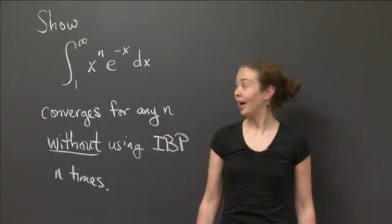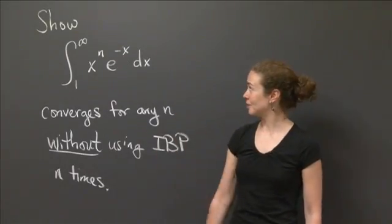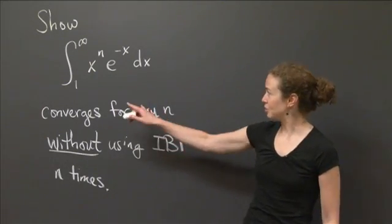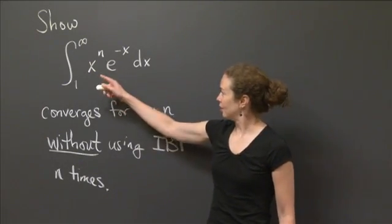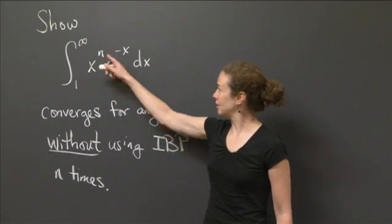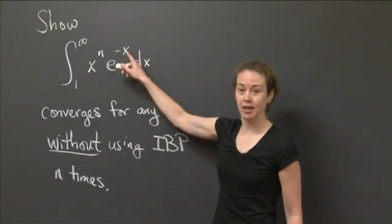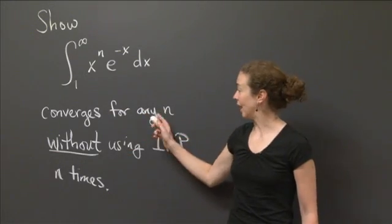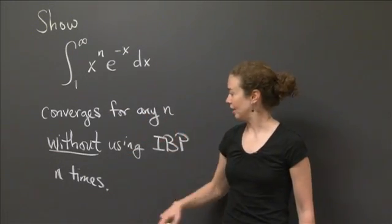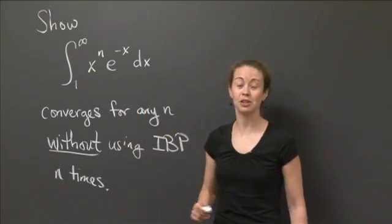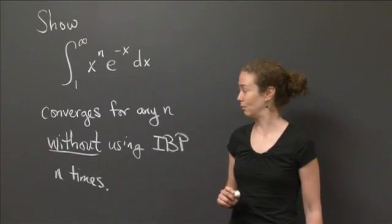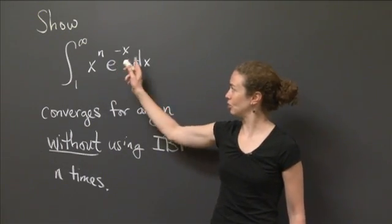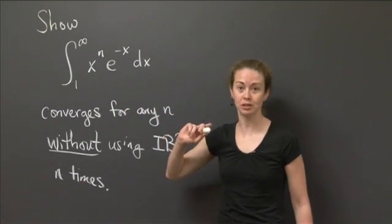Welcome back to recitation. In this video, I'd like us to do the following problem. I want us to show that if we integrate x to the n times e to the minus x from 1 to infinity, that actually converges for any value of n. And I want us to show this without using integration by parts n times, so figure out a way to show that this integral converges.